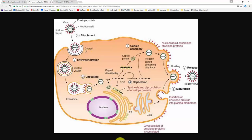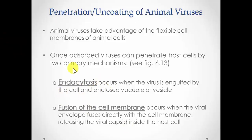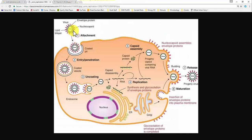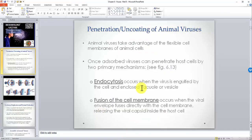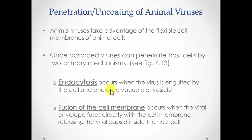That transitions into synthesis followed by assembly. The two mechanisms we were looking at are endocytosis and fusion of the cell membrane. Endocytosis is a lot like phagocytosis — the cell is actually swallowing the virus, letting the virus in the front door inadvertently. The other mechanism is fusion of the cell membrane or fusion of the envelope, where the envelope literally fuses with the cell membrane.